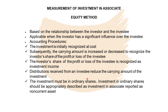The investment must be in ordinary shares, because preference shares are technically non-voting equity. The carrying amount is also decreased by impairment losses. Additionally, there may be increases or decreases to recognize the investor's proportionate share in changes arising from items not recognized by the investee in profit or loss — these are items in other comprehensive income, which can also increase or decrease the carrying amount. Investments in associate are recorded as non-current assets.